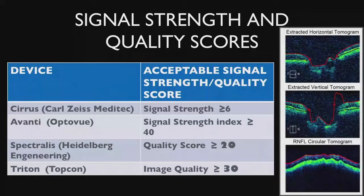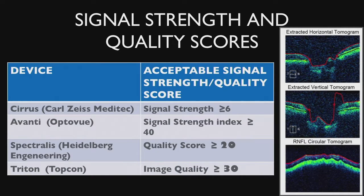These are the nominal signal strengths required for the different devices. There are numbers here that represent the values required to have what is considered an acceptable image. On the right, you see images that would not be acceptable. You can see from where the red and blue lines are outlining tissue borders that there are some segmentation errors — in other words, the machine will give you incorrect information about tissue characteristics and thicknesses.